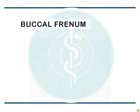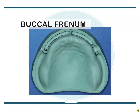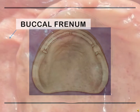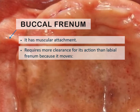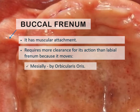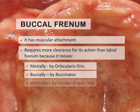The buccal frenum is a fold or folds of mucous membrane extending from the mucous membrane reflection area to the slope or crest of the residual alveolar ridge. It forms the dividing line between the labial and buccal vestibule. It has muscular attachments and requires more clearance for its action than the labial frenum, because it moves medially by orbicularis oris, buccally by buccinator, and vertically by levator anguli oris.